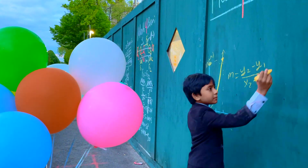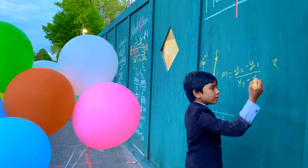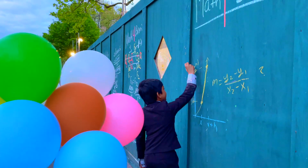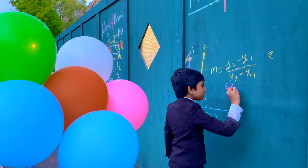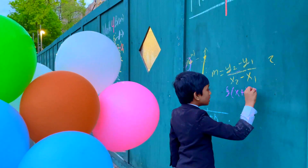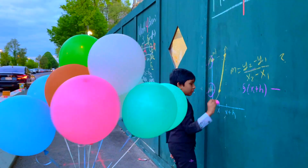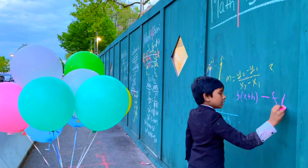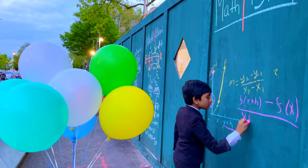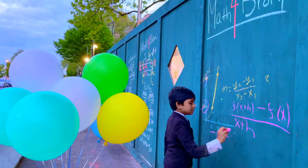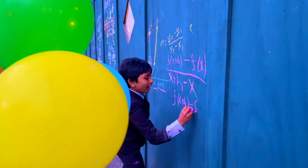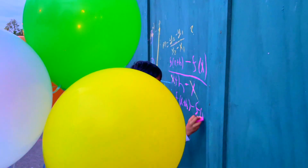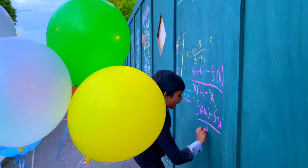So now what is that going to be? We have to just plug it in. So y2 is going to be f of x plus h, and f of x is y1. So f of x. And then we have to have x plus h minus x. As you can see, we have f of x plus h minus f of x over these two cancel out, and so that gives us h.